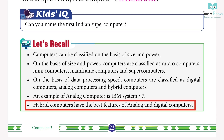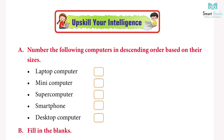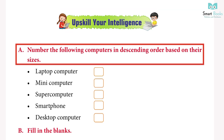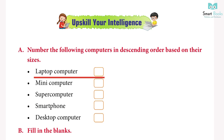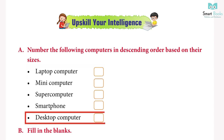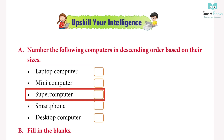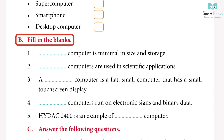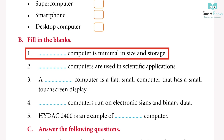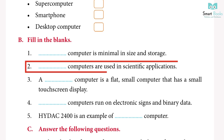Upscale your intelligence. Exercise A: number the following computers in descending order of their sizes: 1. Smartphone, 2. Mini computer, 3. Laptop computer, 4. Desktop computer, 5. Supercomputer. Exercise B — Fill in the blanks: 1. Micro computer is minimal in size and storage. 2. Hybrid computers are used in scientific applications.